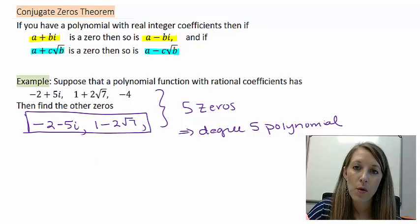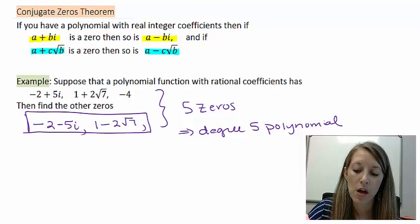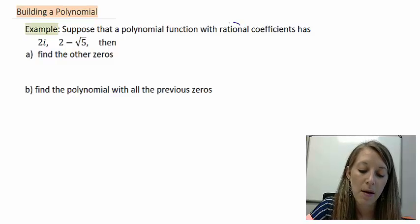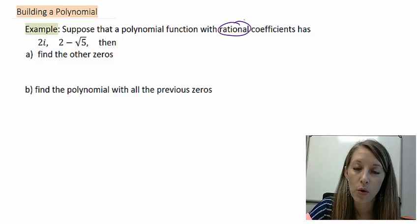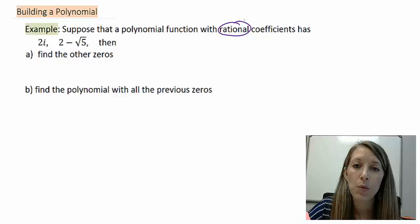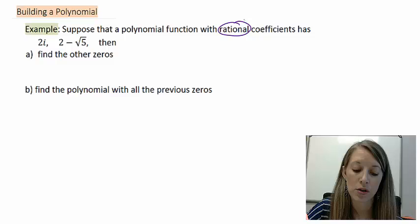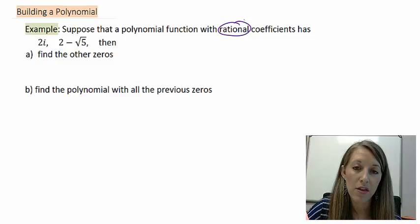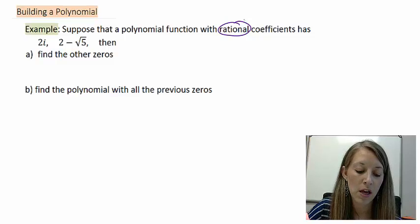Now that we know that, we are fully able to come up with a polynomial given zeros. Let's do an example. Suppose that a polynomial function has rational coefficients, meaning that it has coefficients of whole numbers or fractions. We need to know that information to use our conjugate zeros theorem that we just learned. If we have the zeros 2i and 2 minus square root 5, then in part a, we want to find the other zeros, and in part b, we want to come up with a polynomial.